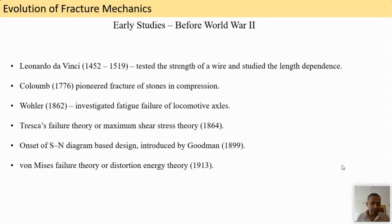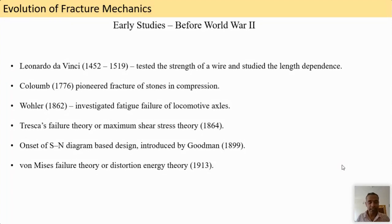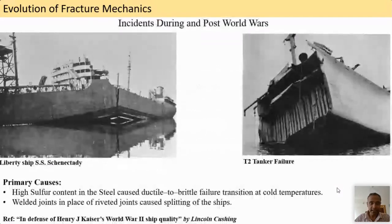Later, Coulomb studied fracture of stones in compression. Wöhler investigated fatigue of locomotive axles. Tresca's failure theory — the maximum shear stress theory for ductile materials — became well known. Then the SN diagram for stress-based fatigue life determination was introduced by Goodman, followed by Von Mises theory, also called the J2 flow theory, distortion energy theory, or octahedral stress theory.